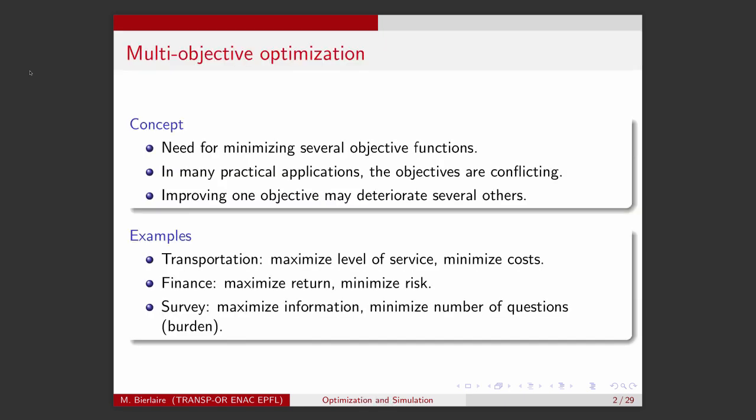Multi-objective optimization is useful when there is a need to optimize several objective functions at the same time. And actually, in most practical applications, these multiple objectives are usually conflicting. It means that if you improve one of them, it may deteriorate the others.